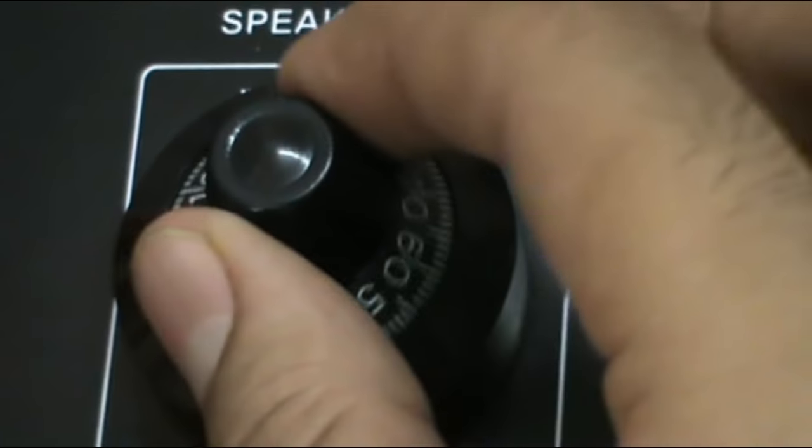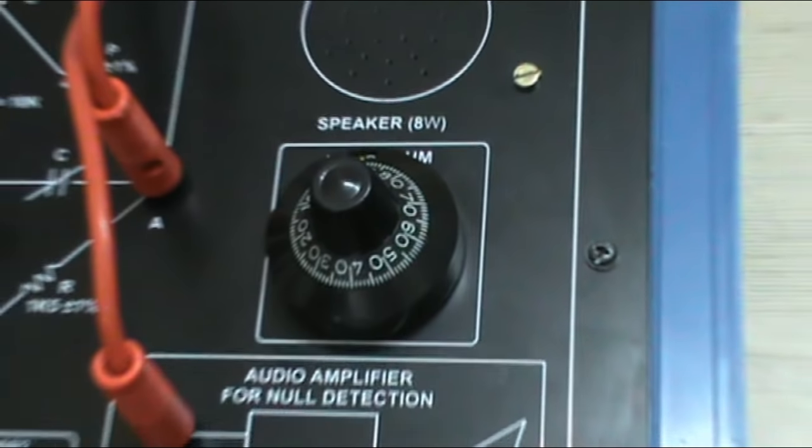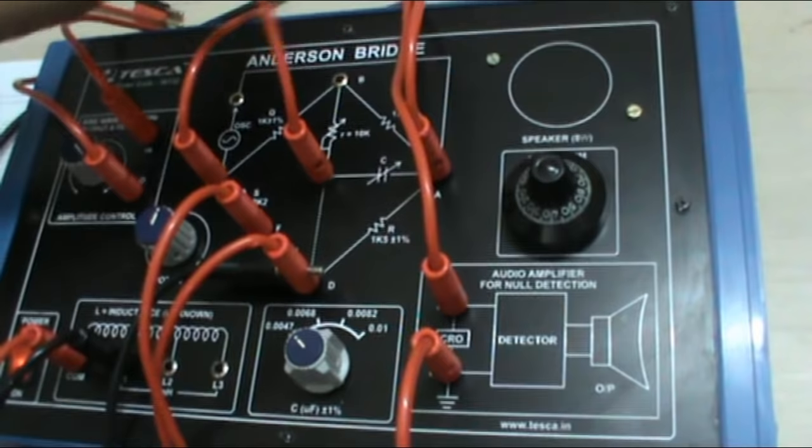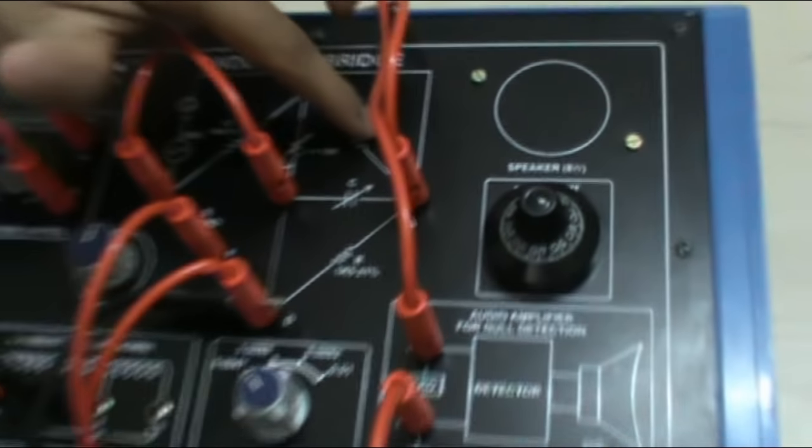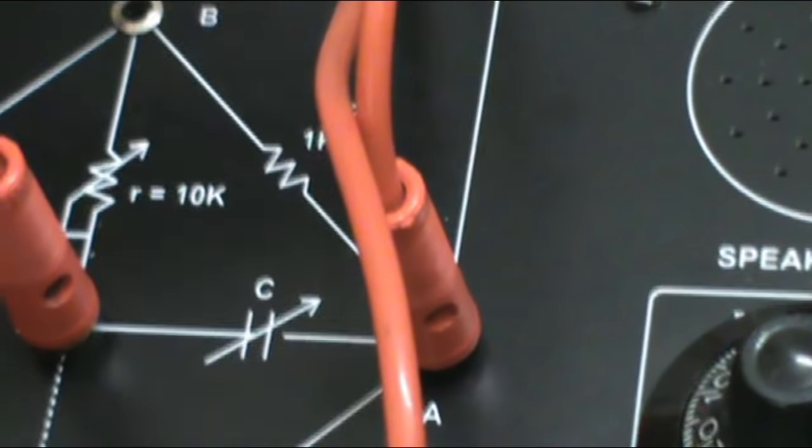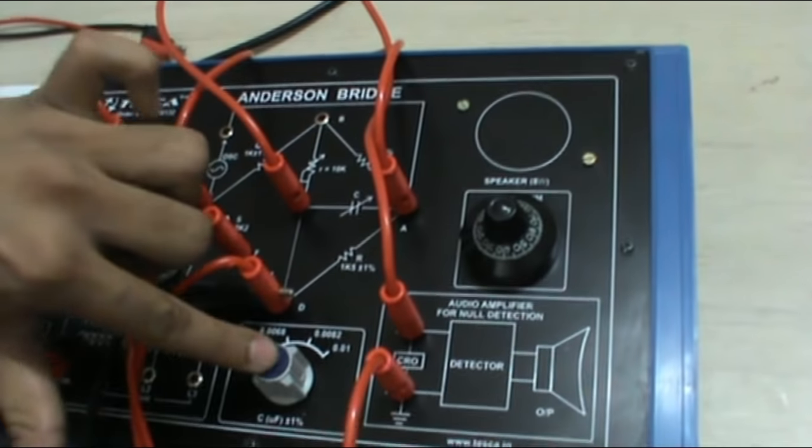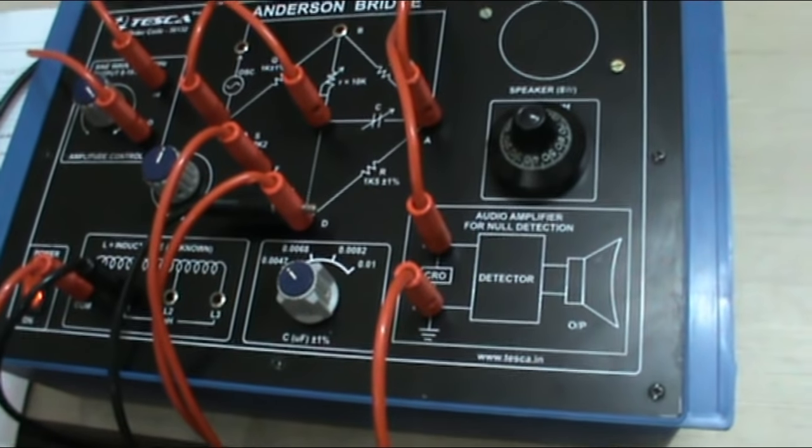Now when we get the minimum volume, calculate the values of P, Q, R, this R and C. Note these values.